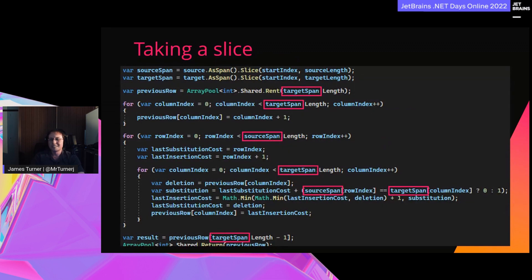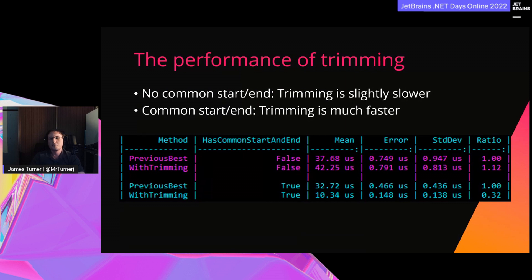We keep the trimming code but slice instead of creating a substring. Span is a drop-in replacement — we only need some variable renaming for clarity. Trimming only works when strings actually have something to trim, so we have a special benchmark with and without common prefixes and suffixes. The trimming variant performs slightly worse when there's nothing to trim — we're doing extra calculation that isn't helpful. But when there are characters to trim, it performs much faster. Interestingly, even our previous best implementation performs measurably faster when strings share common prefixes and suffixes — this relates to branch predictability.